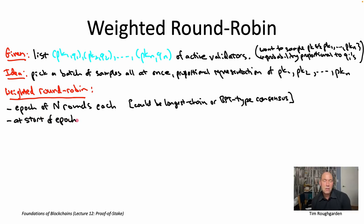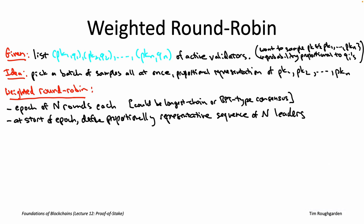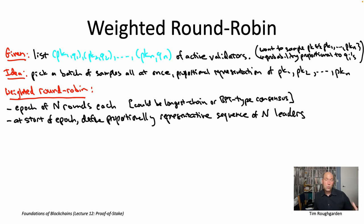The first stage, you have a leader who's proposing a block for everybody else to vote on. And at the start of each epoch, the protocol somehow specifies a sequence of capital N leaders with roughly proportional representation of all of the public keys of the active validators. And you can imagine various ways a protocol might derive this sequence from the list of active validators and their stakes. Some approaches are just very simple and deterministic. So for example, if you had a list of three active validators, A, B, and C, with stake amounts two, one, and two.